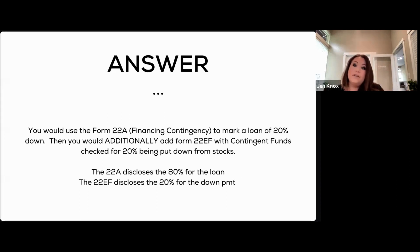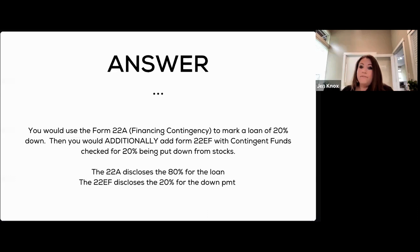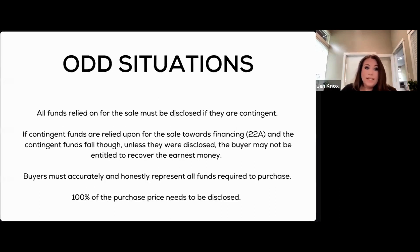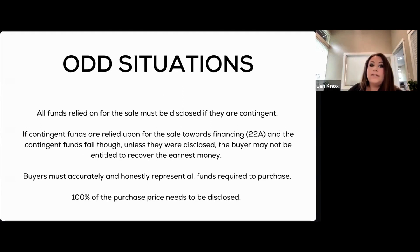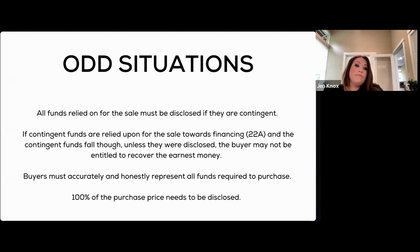Without the disclosure of the contingent funds, you are risking the protection of your buyer's financing contingency. Remember, all funds must be accounted for — if they're not listed as contingent, you're representing they are not. If contingent funds are relied upon and fall through without being disclosed, the buyer may not be able to recover their earnest money through their financing addendum. Buyers need to accurately and honestly represent all funds required, and 100% of the price should be disclosed.